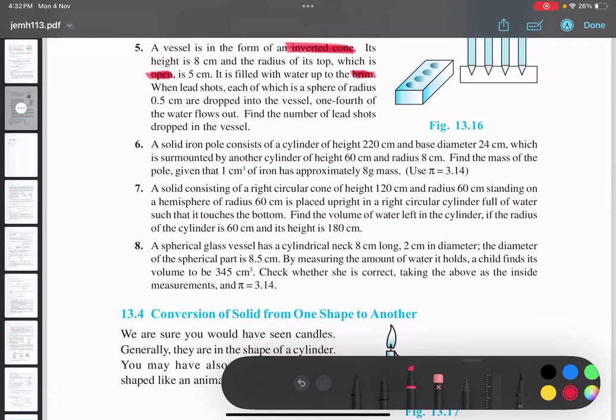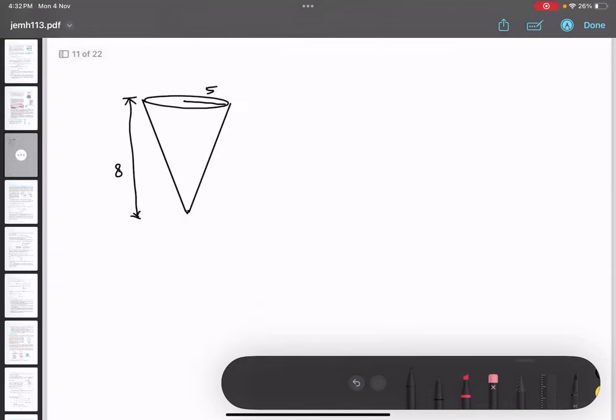When lead shots, each of sphere shape with radius 0.5, are dropped into the vessel, one-fourth of the water flows out. Find the number of lead shots dropped in the vessel. So what they are saying, they threw some balls like this inside this thing.